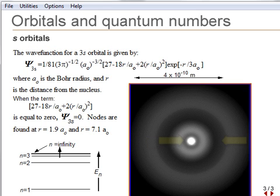The 3s wave function has two nodes from solving the quadratic equation seen in the wave function. The nodes occur at 1.9 and 7.1 times the Bohr radius a0.